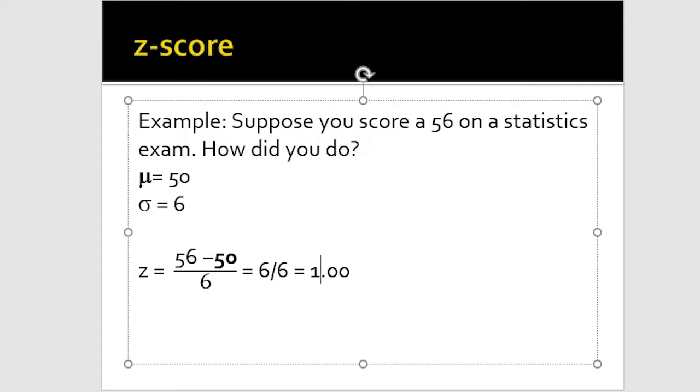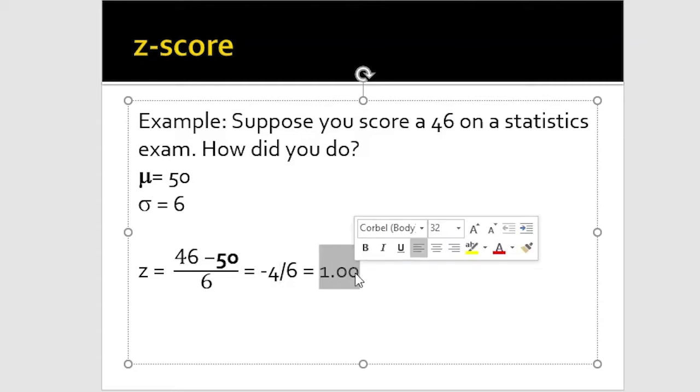An example here, if suddenly the score was a 46 rather than 56. If we've got now 46 for this, we have a negative number here, you'll notice negative 4 divided by 6. Now we are at negative 0.67. We scored below the mean because it's a negative number. We scored about two-thirds of a standard deviation below the mean. We wouldn't have done as well on this particular exam with those particular numbers.